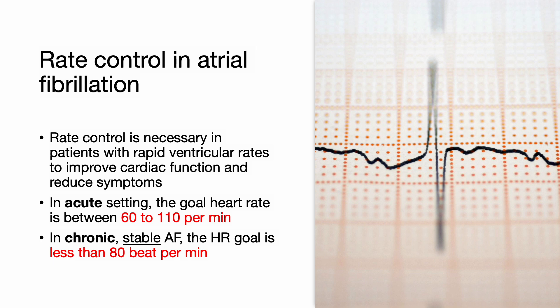Rate control is necessary in patients with rapid ventricular rates to improve cardiac function and reduce symptoms. In an acute setting, the goal heart rate is between 60 to 110 beats per minute. In chronic stable atrial fibrillation, the heart rate goal is less than 80 beats per minute.